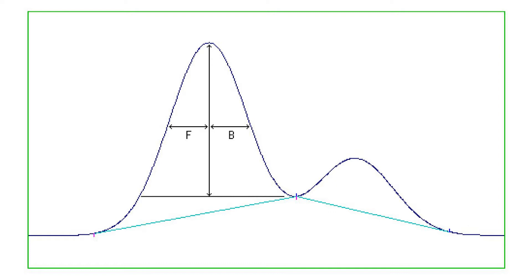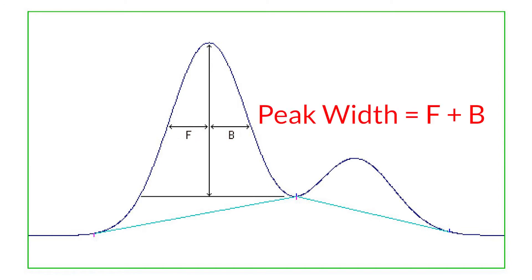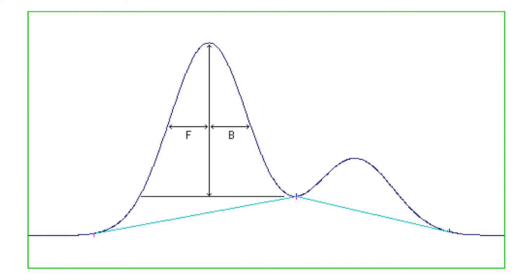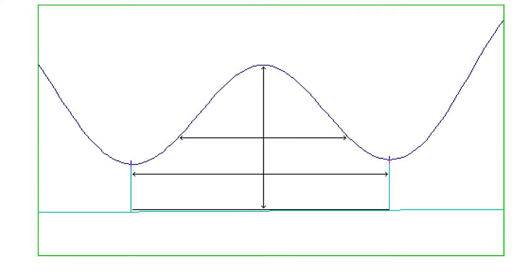The points where this line intersects the chromatogram define the front width and the back width of the peak. The peak width is equal to the sum of the front width and the back width. Similarly, the width of a peak may be measured at any other fractional height, such as 10 percent.